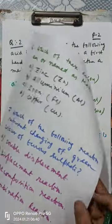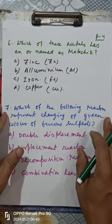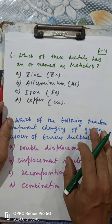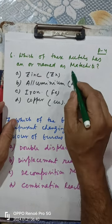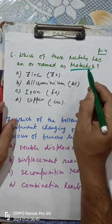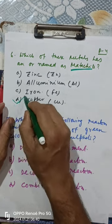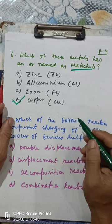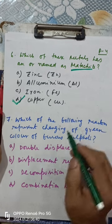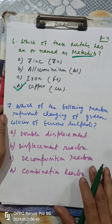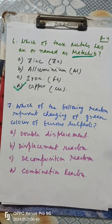Question six: malachite is an important ore of which metal? Malachite is an important ore of copper, so the answer is copper. Question seven: which of the following reactions represents the changing of the green color of ferrous sulfate? Ferrous sulfate decomposes to ferric oxide and its color changes.